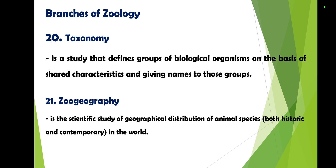Zoogeography is the scientific study of the geographical distribution of animal species, both historic and contemporary, throughout the world. It is a combination of zoology and geography — zoology because it deals with animals, and geography because it deals with their distribution across different locations worldwide.